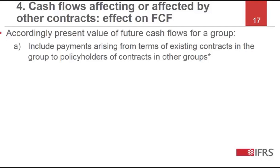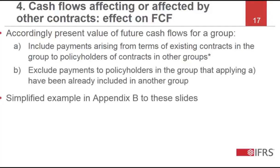The fulfilment cash flows for a group include payments arising from the terms of existing contracts, even if those payments are expected to be made to policyholders of contracts in other groups. And they exclude payments to policyholders in the group that have been included in the fulfilment cash flows of another group. There is a simplified example in Appendix B to these slides to illustrate this concept.